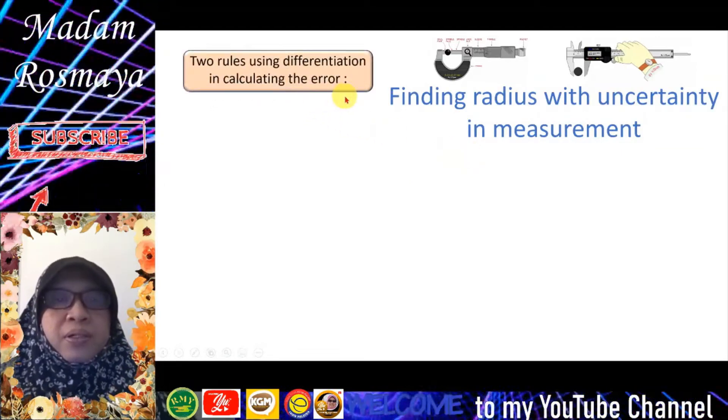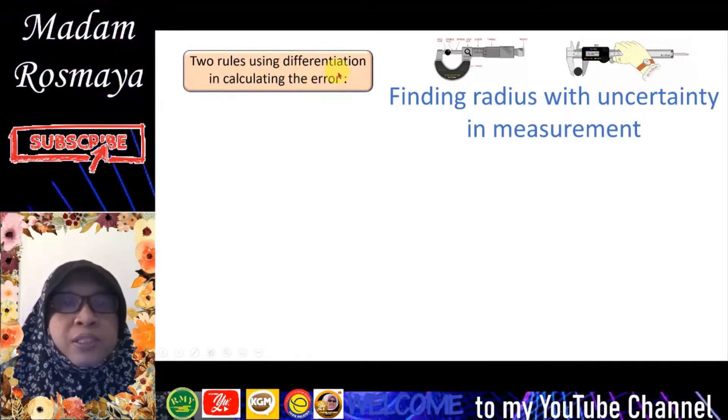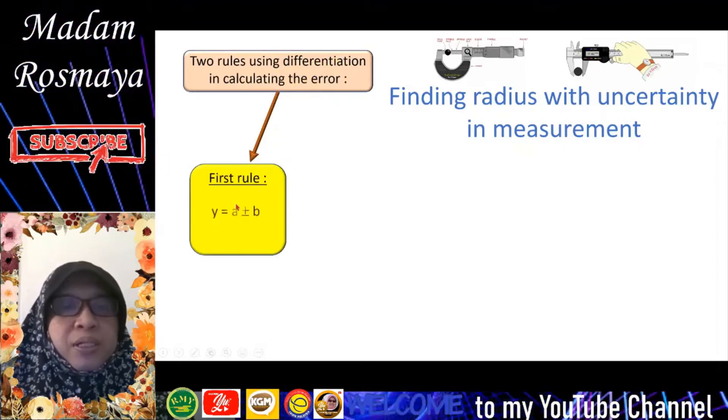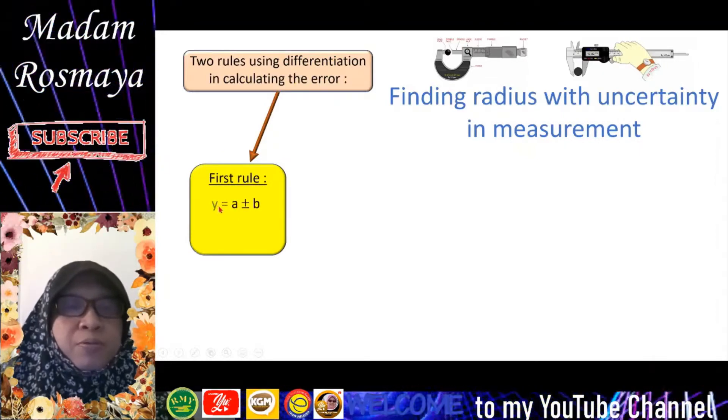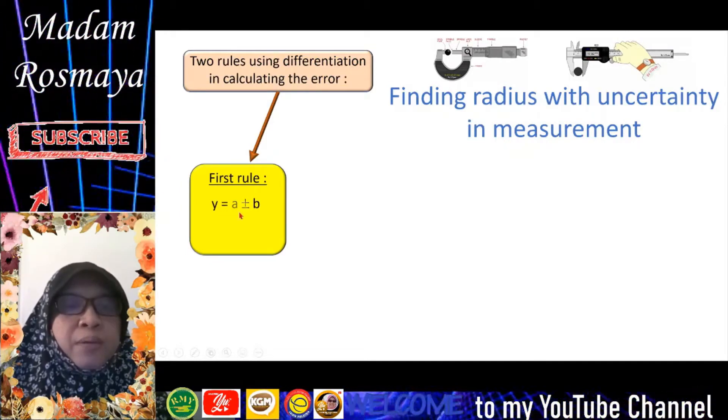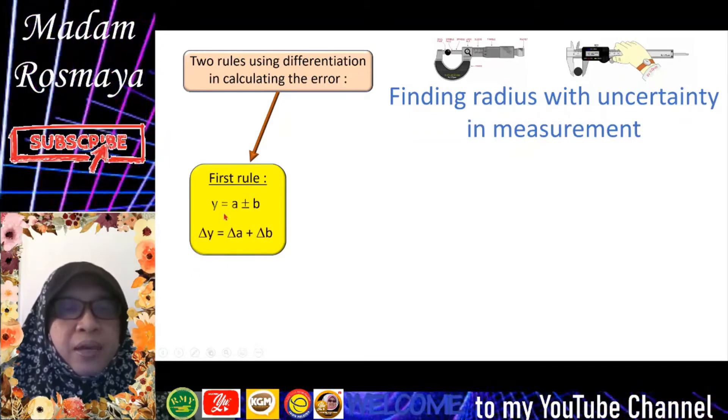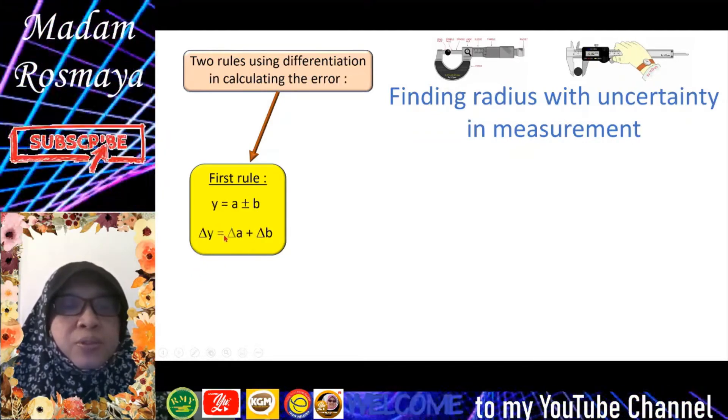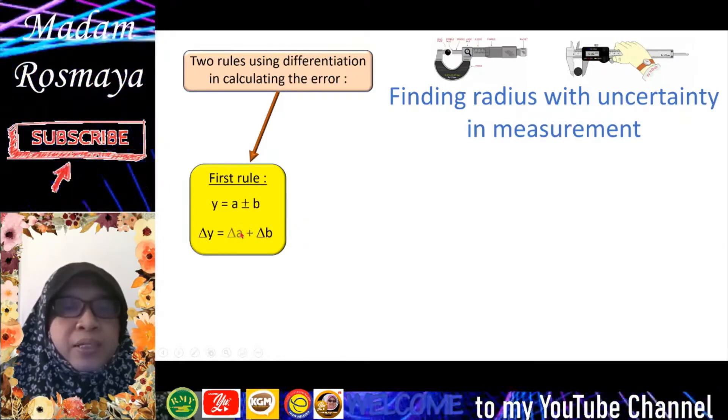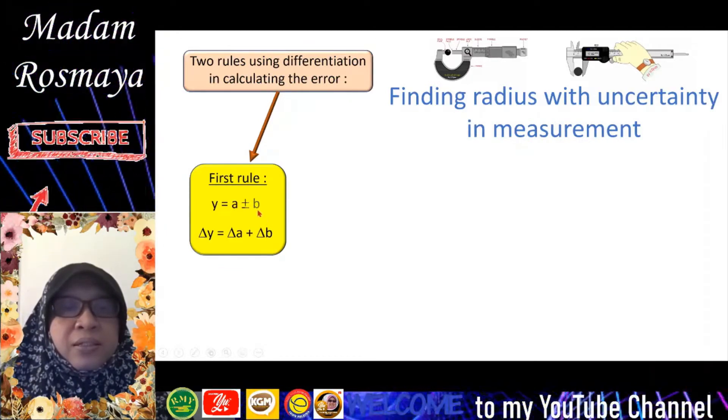Remember, recall what we have learned before. There are two rules using differentiation in calculating the error. The first rule: if the formula involves addition or subtraction, for example y = a ± b, then the error or uncertainty Δy = Δa + Δb. So Δa is the uncertainty for a and Δb is the uncertainty for b.